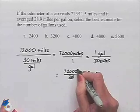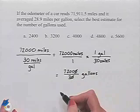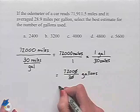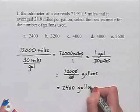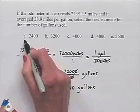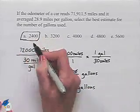We can divide first by 10, and then we're going to divide 7,200 by 3, and that's going to give us a value of 2,400. So the best estimate is going to be A.